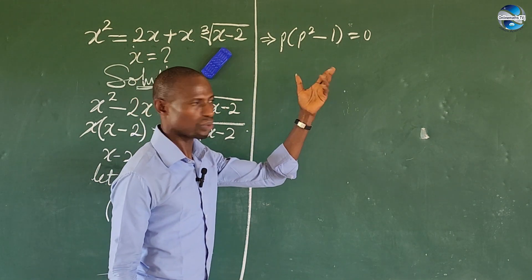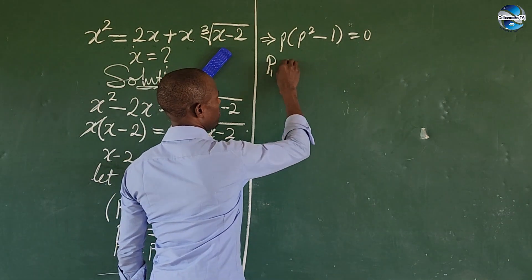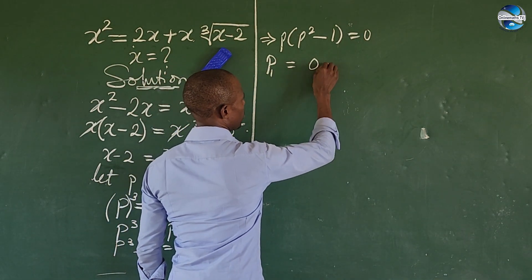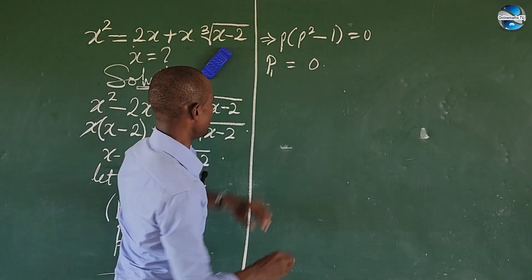So the first value of our p is equal to 0. That's our p₁. Then let's solve what we have in here, so we have p² minus 1 equals 0.